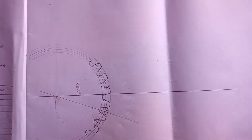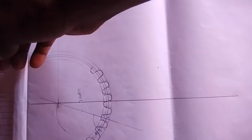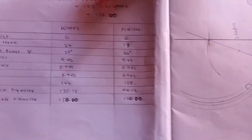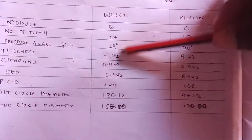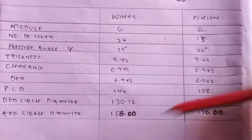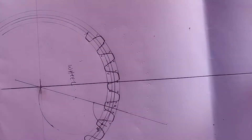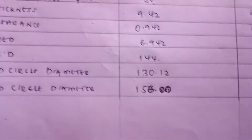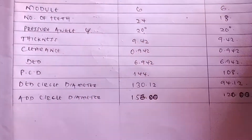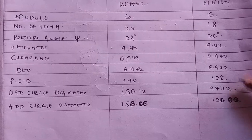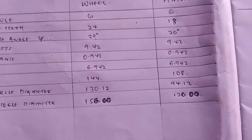For the wheel, you will follow the information given to you on the table. We have used the information on the wheel, and now we have to use that information to construct the other part. From this point, you identify the PCD of the wheel. You first draw the PCD. The PCD of the wheel is 108 millimeters.